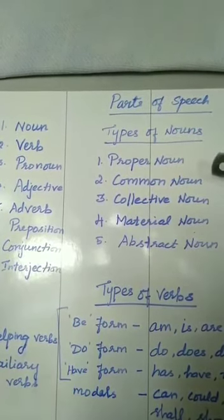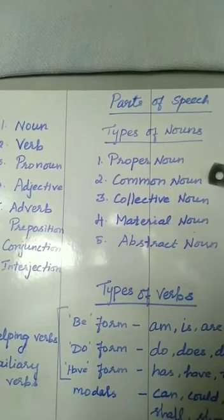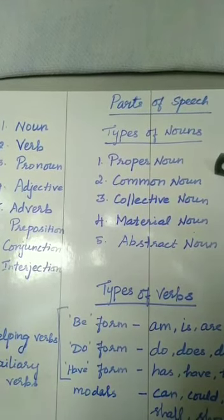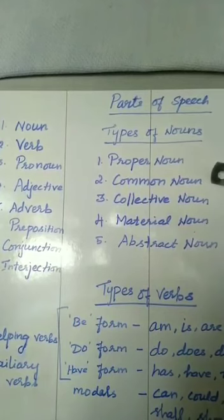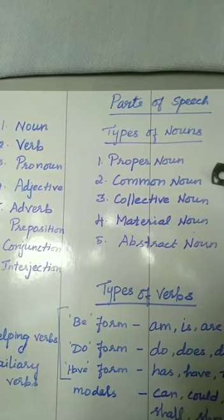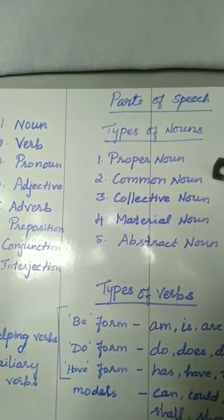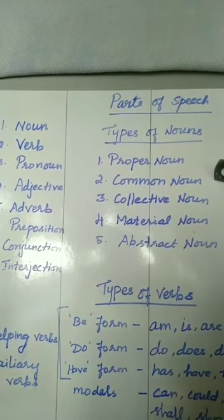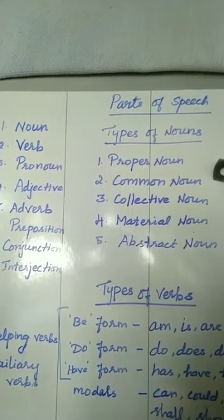Then we can move on to common noun. What is a common noun? A noun which denotes a person, thing, or a place in general — if a person, thing, or place is denoted generally, then it is said to be a common noun. Examples: boy, girl, woman, tree, animal, country, bird. These are called common nouns.